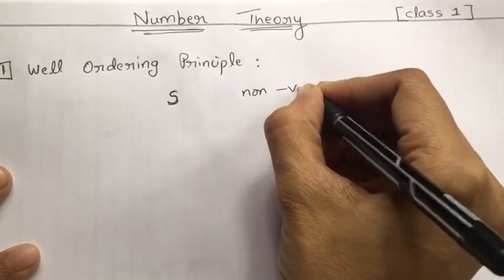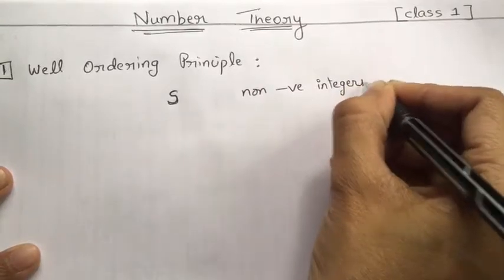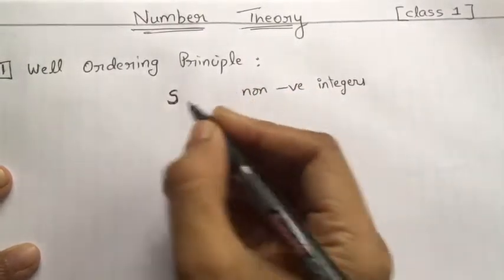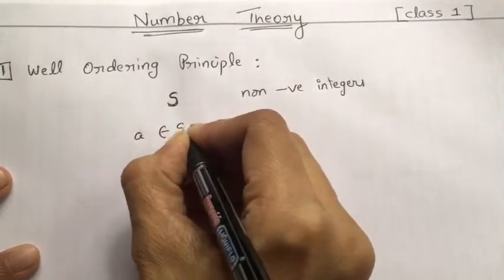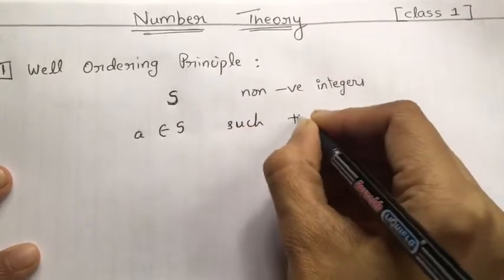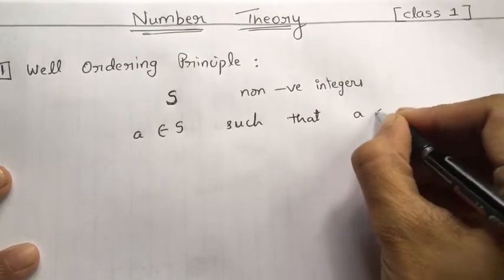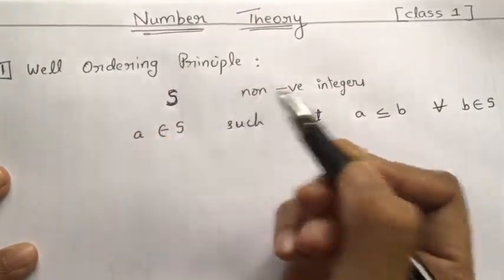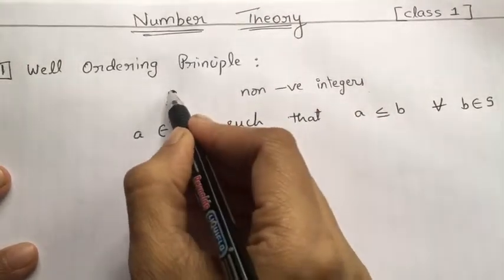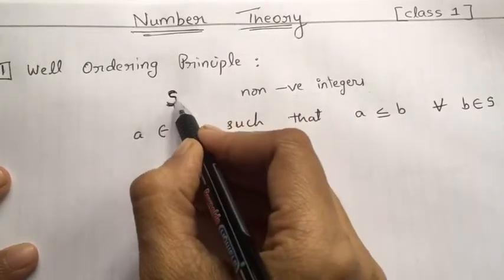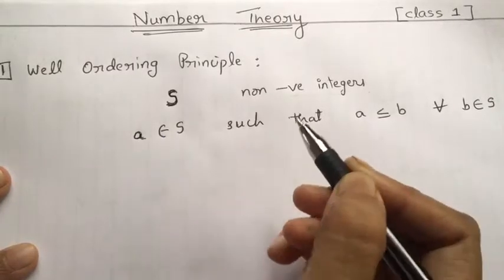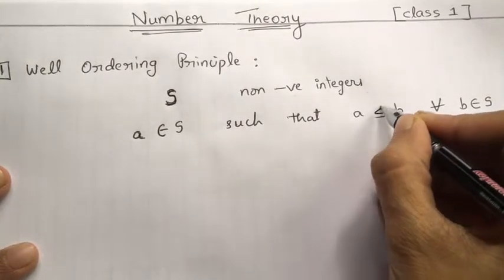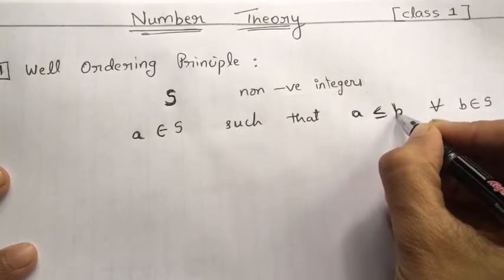That is my well-ordering principle. Suppose S is my non-empty set of non-negative integers. Then S contains a least element — that is, there is an integer a in S such that a is less than or equal to b for all b belonging to S.